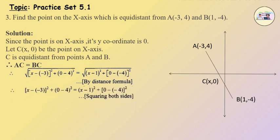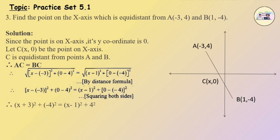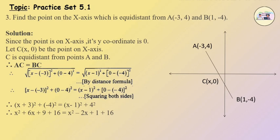Therefore, (x minus of minus 3) the whole square plus (0 minus 4) the whole square is equal to (x minus 1) the whole square plus (0 minus of minus 4) the whole square. Therefore, x squared plus 6x plus 9 plus 16 is equal to x squared minus 2x plus 1 plus 16.